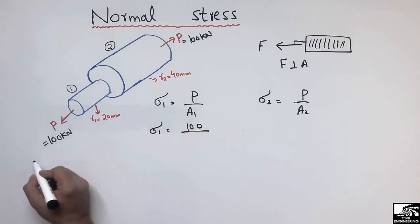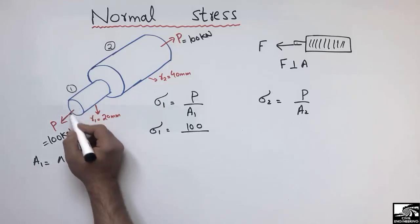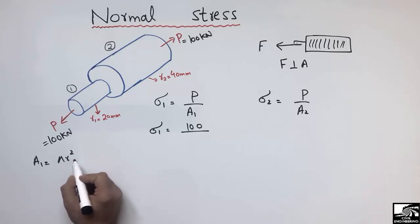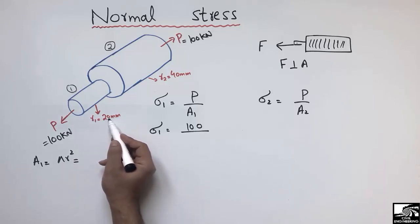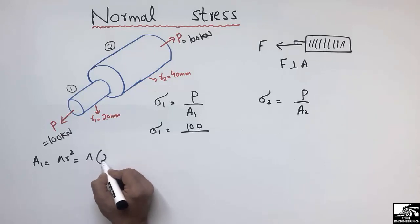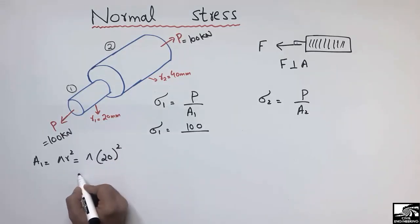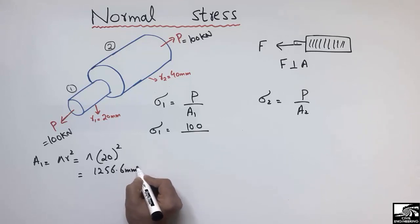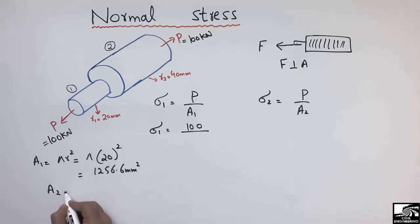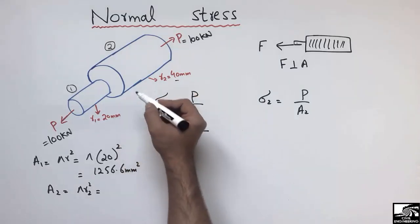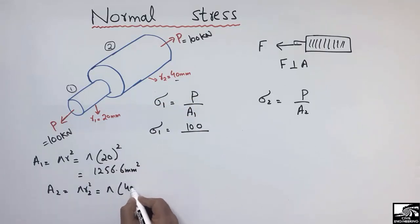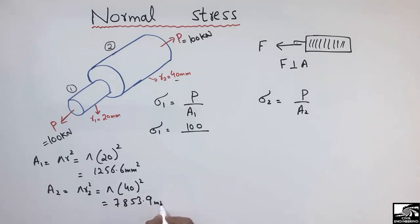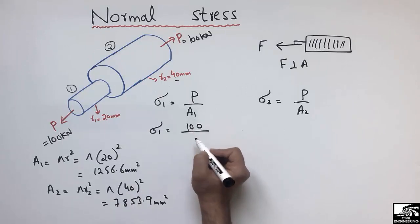The load is 100 kN. First, finding area A1: since it is circular, A1 = πR². With R1 = 20 mm, A1 = π × 20² = 1256.6 mm². Similarly, A2 = πR², and since R2 = 40 mm — double that of R1 — A2 = π × 40² = 7853.9 mm².